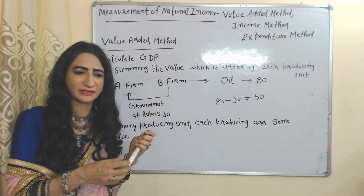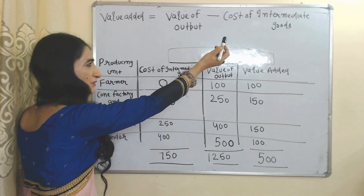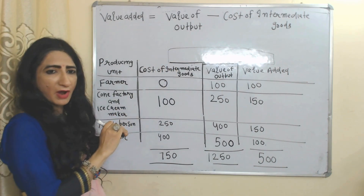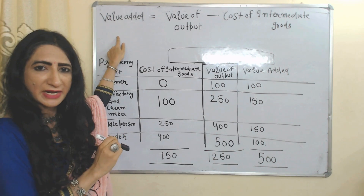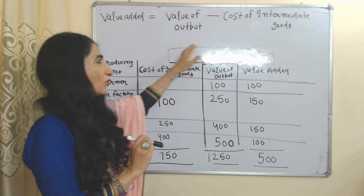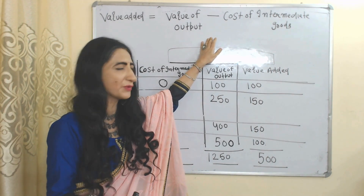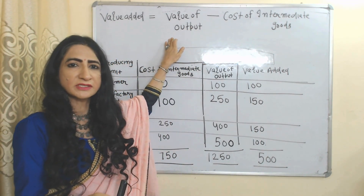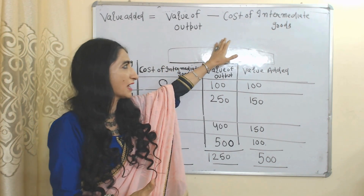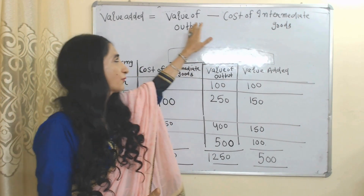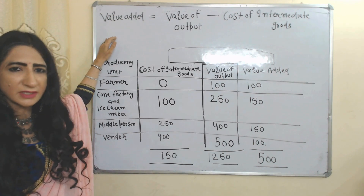When we subtract the cost of intermediate goods from the value of output, it becomes equal to the value added by each producing unit. Cost of intermediate goods means the price of our input; value of output means our market sale price.